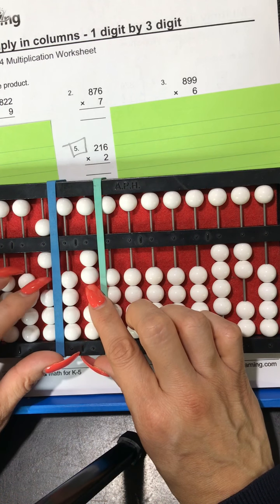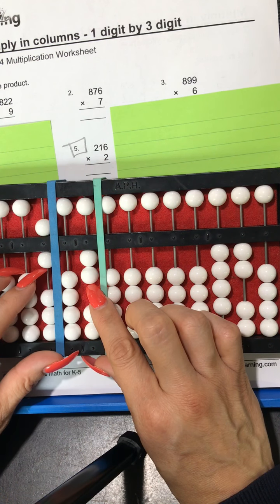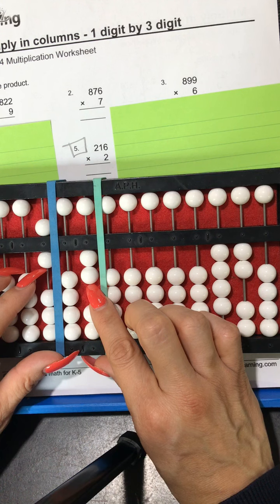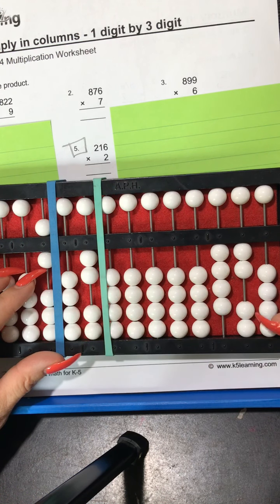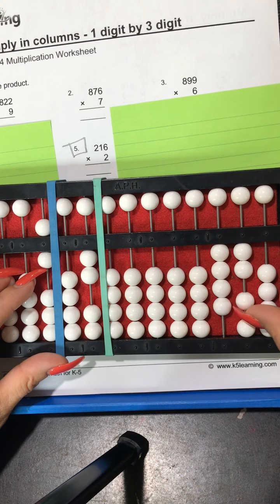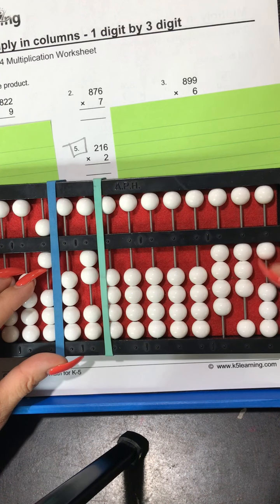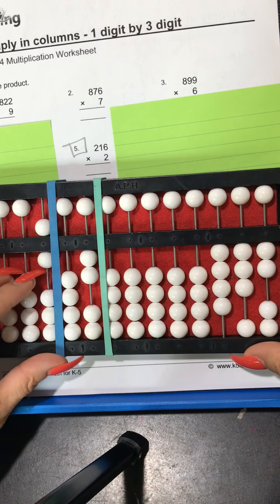So now we go 2 times 6 is yes it's 12 so we just set that directly 10, 11, 12 on my right hand side.